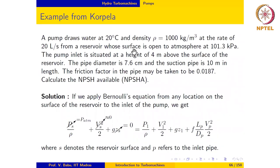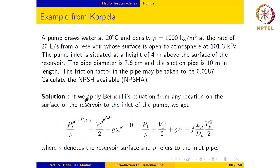We work out this example taken from Professor Korpela's book. A pump draws water at 20°C, density 1000 kg/m³, at a rate of 20 liters per second from a reservoir whose surface is open to atmosphere at 101.3 kPa. The pump inlet is 4 meters above the reservoir surface. The pipe diameter is 7.6 cm, the suction pipe is 10 m in length, and the friction factor is 0.0187. We are asked to calculate the available NPSH.